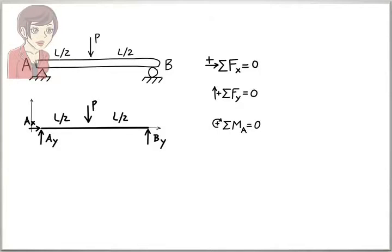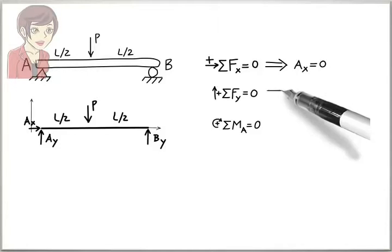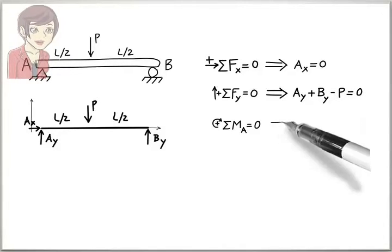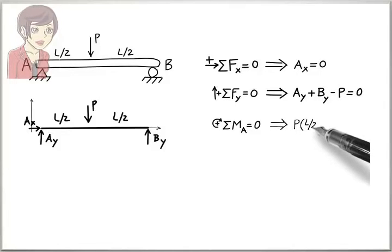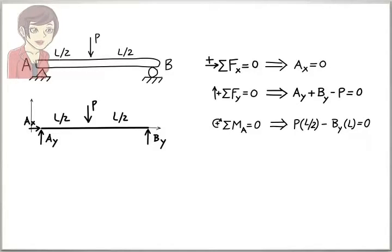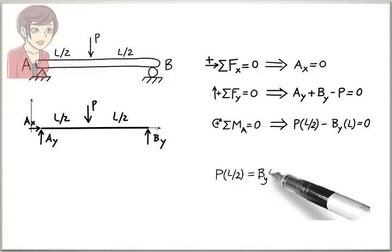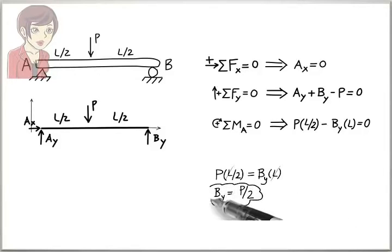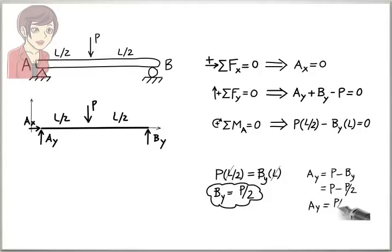The first equation in the expanded form gives us AX equals zero. The second equation gives us AY plus BY minus P equals zero. Third equation gives us P times L divided by two minus BY times L equals zero. Solving the third equation for BY gives us BY equals P divided by two. Solving the second equation for AY gives AY equals P divided by two.